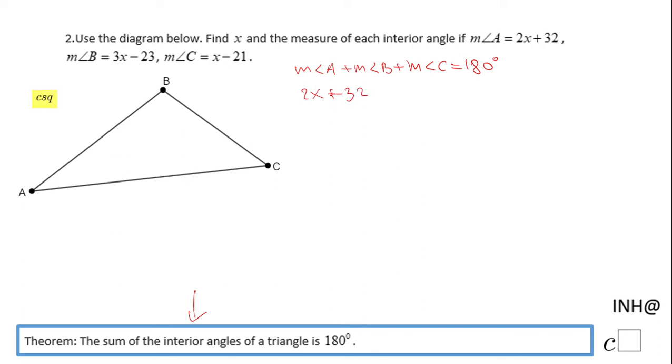And the last one, the measure of angle C, is x - 21, equals 180. So now we have an algebraic equation with multiple x's on one side, the left side, where we can combine the like terms.